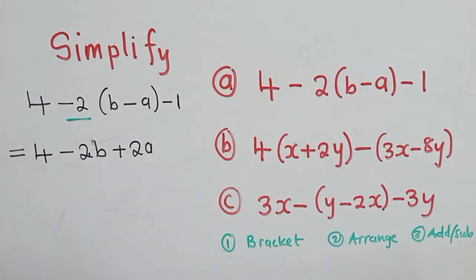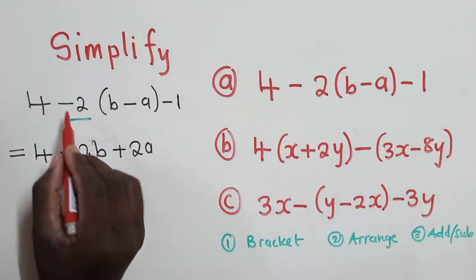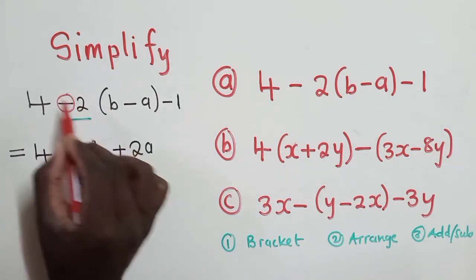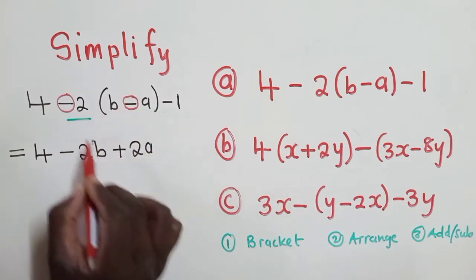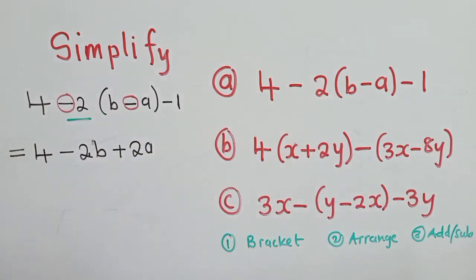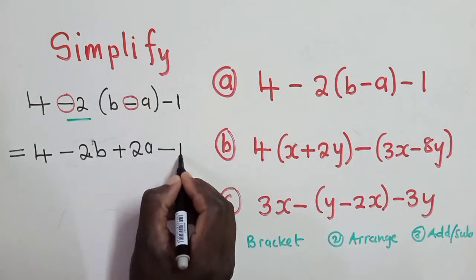When you've got a negative, which is right here, and a negative that is inside the brackets, when you multiply them, they give you positive. So you must keep this. This is where most people make mistakes. And then we say minus 1.